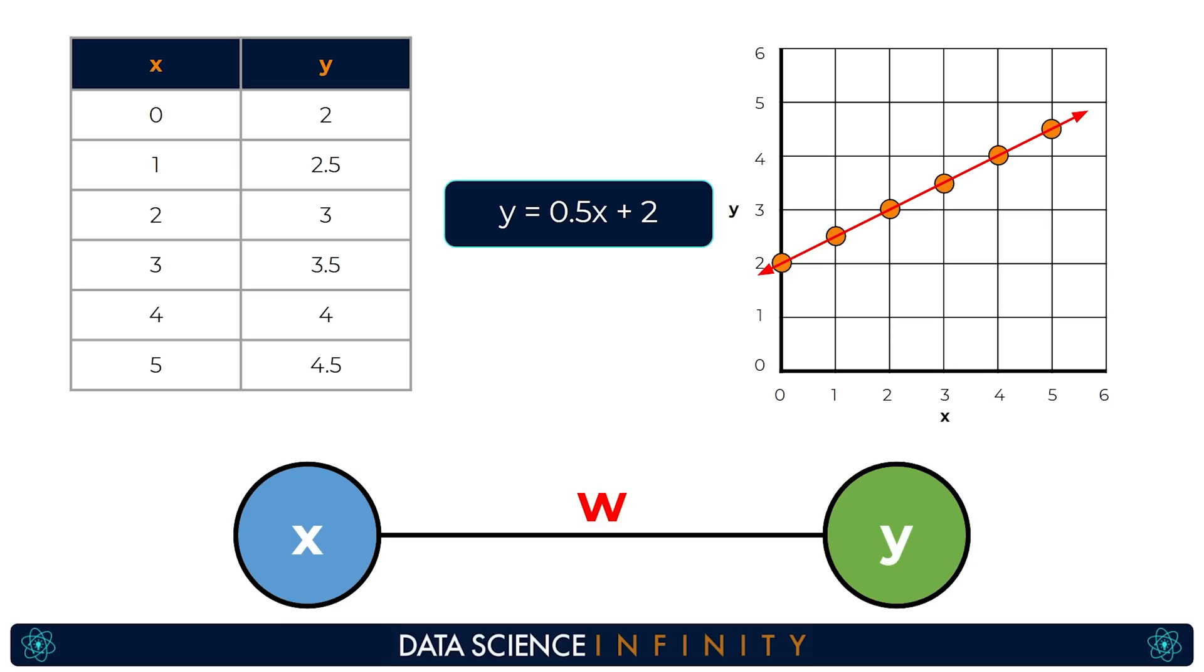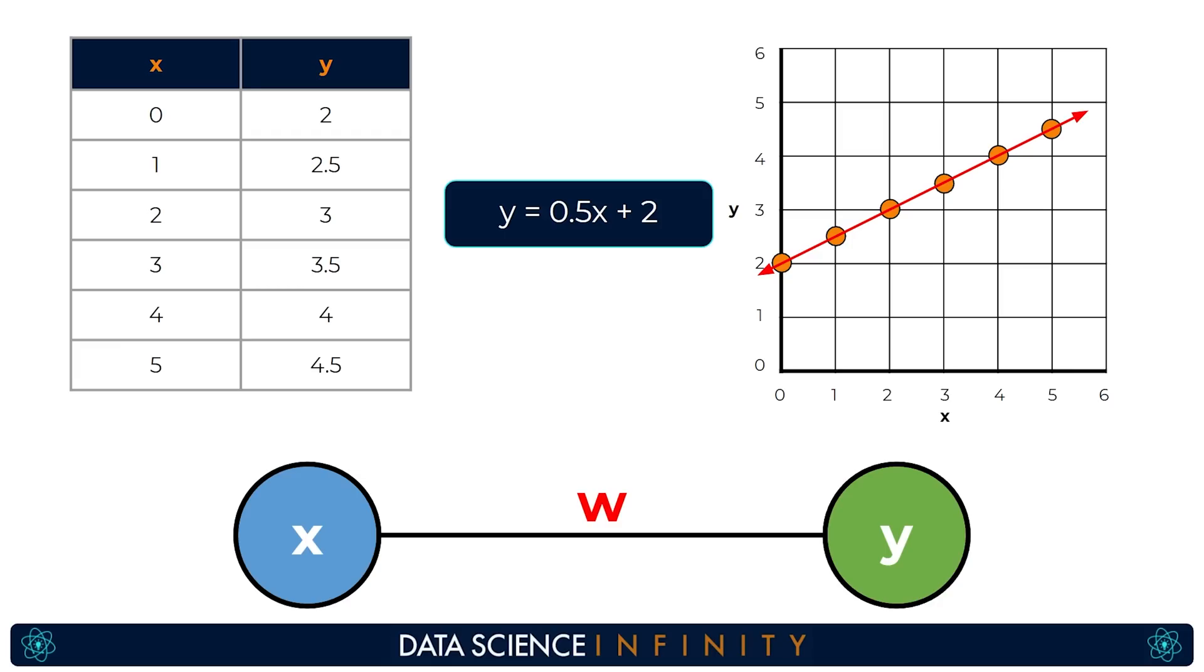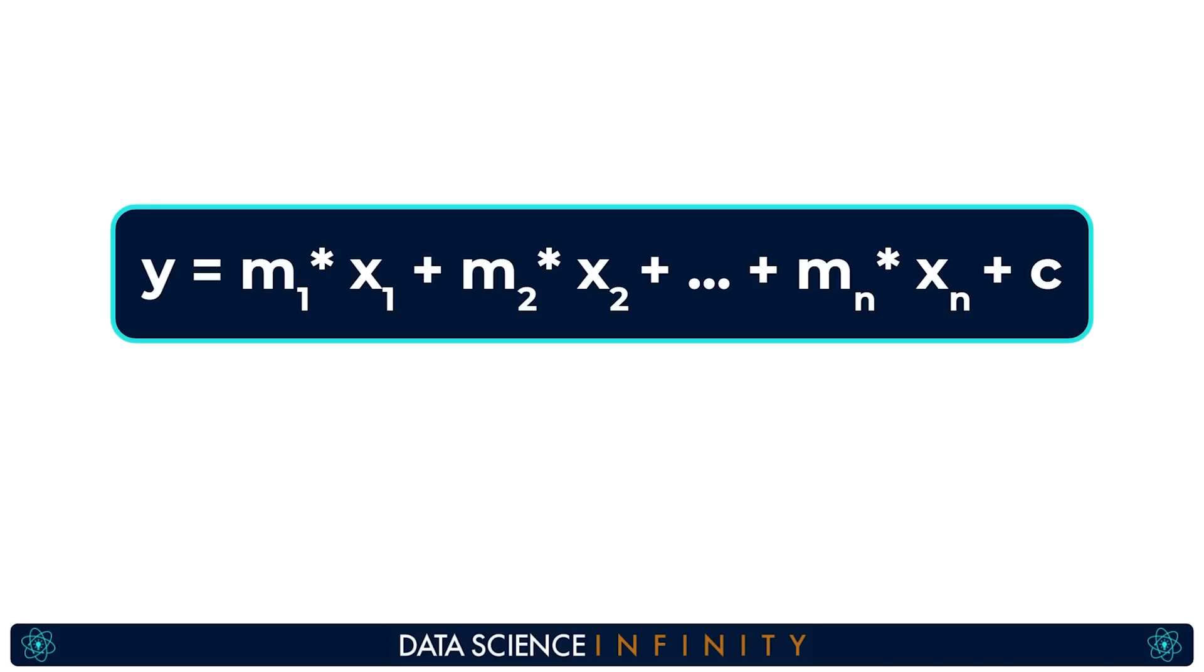Again here we are talking about a super simple example where we have a single input value entering our network. But if we had multiple inputs to our network and here in this example we can see we have three then our linear regression comparison still holds true. When we have multiple inputs the formula for our line of best fit or more correctly our plane of best fit when there are multiple variables just extends out to this here. Where each of the inputs gets its own unique slope or weight or coefficient value. And then we have a single constant or bias value that gets added at the end.